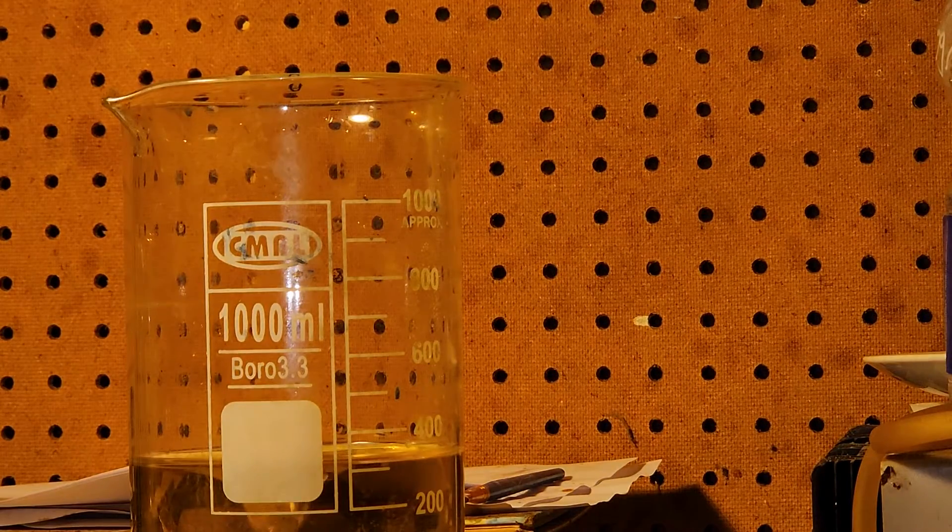Now we'll turn off the stirring. It's still warm. Can you see that color? That color is copper ascorbate which will make copper nanoparticles.